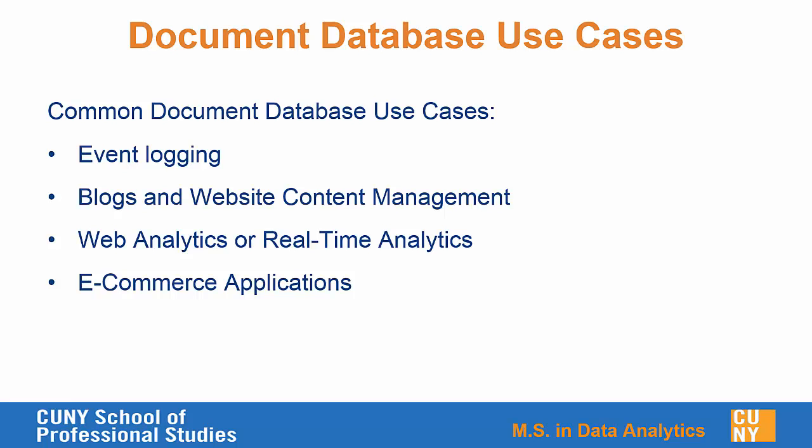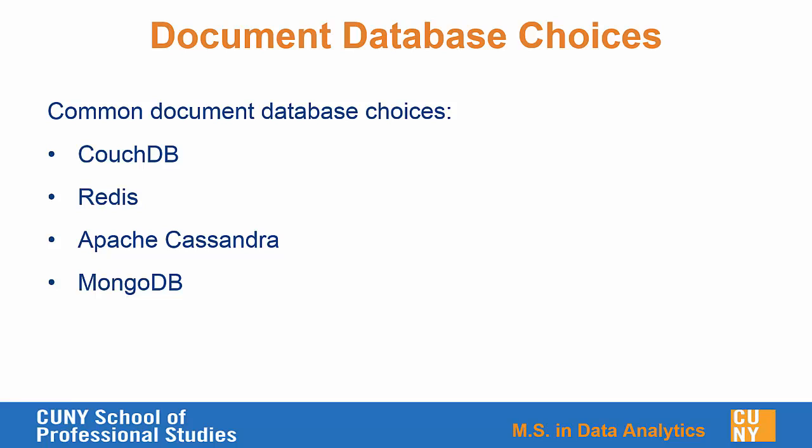There are a variety of document databases available. In this course we're going to focus on MongoDB, but there are several others. CouchDB in particular is a pretty popular one. Redis and Apache's Cassandra are also document databases. Each one offers certain advantages and disadvantages that you can research on your own.